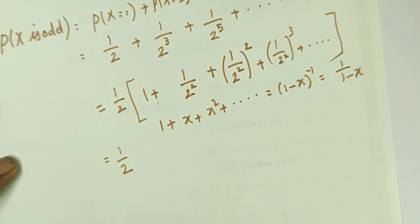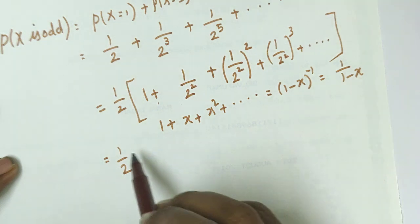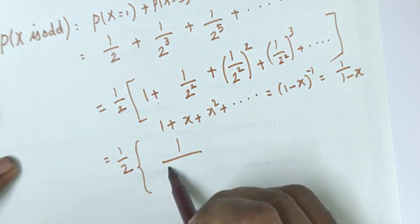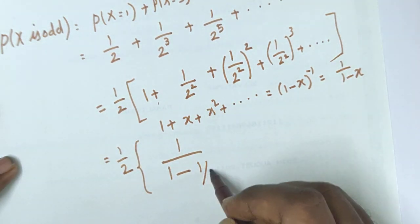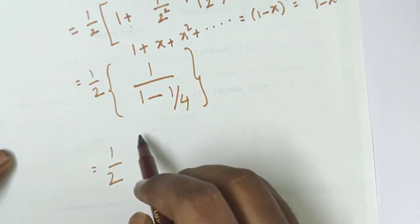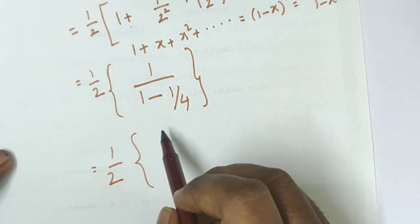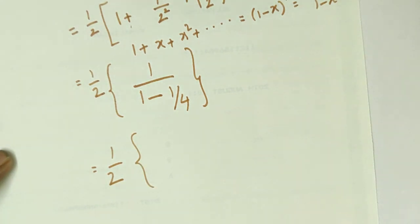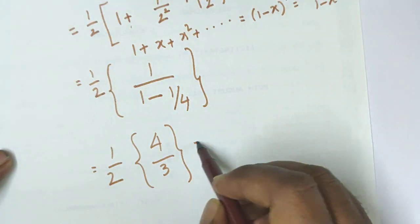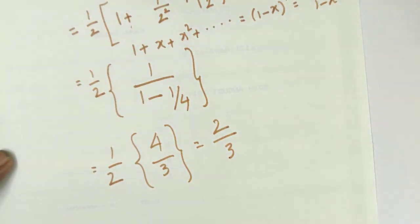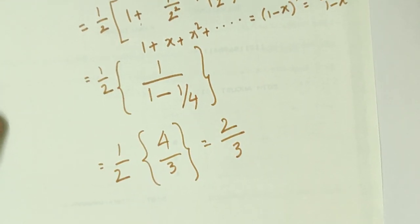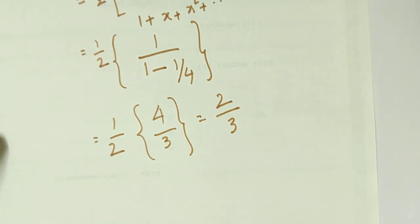So applying the formula: the sum is (1/2) times 1/(1 - 1/4). Substituting: 1 minus 1/4 equals 3/4, and its reciprocal is 4/3. So the answer is (1/2) times (4/3). The 2 and 4 cancel, giving the answer 2/3. That is option B. Please subscribe to the channel. Thanks for watching.